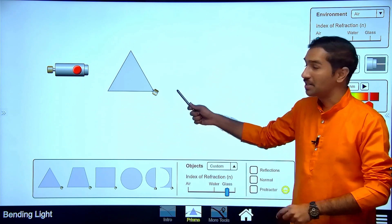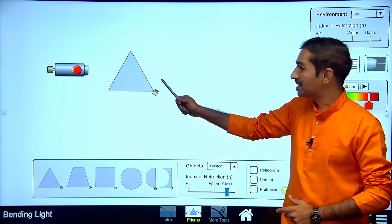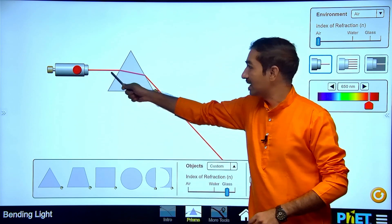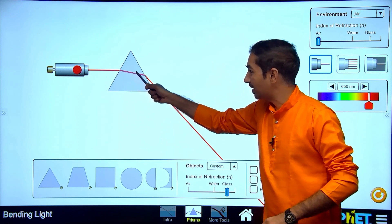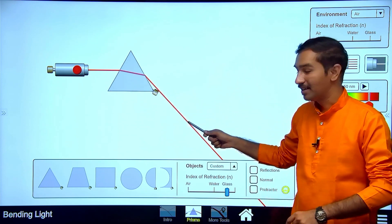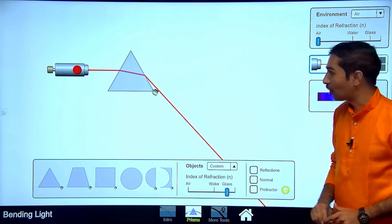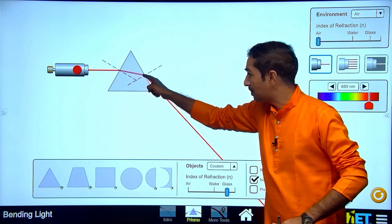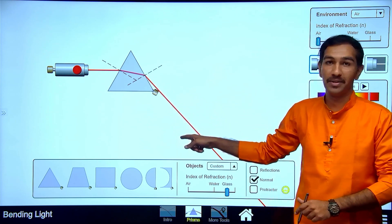So here we can see there is a prism and here is the laser. The laser is used to pass the incident ray. See, the incident ray is coming, it is getting refracted, and this is the emergent ray. So if we look at the normal here, this is the normal. The emergent ray bends towards the normal, and then away from the normal.